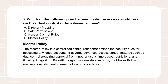Question three: Which of the following can be used to define access workflows, such as dual control or time-based access? Choices are A, directory mapping; B, safe permissions; C, access control rules; D, master policies. For defining those kinds of workflows, the answer is D — the master policy. This is where you set up not just who gets access, but the conditions around it — like how and when. It lets you implement things like requiring two people to approve an access request (dual control), or saying this admin can only access this critical server between 2 and 4 p.m. (time-based access).